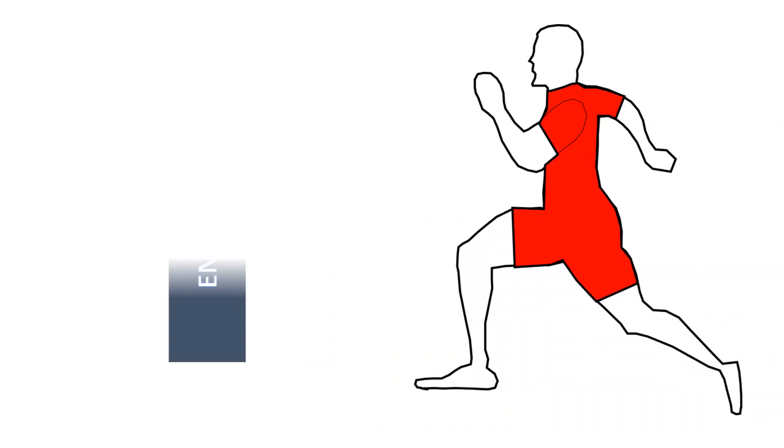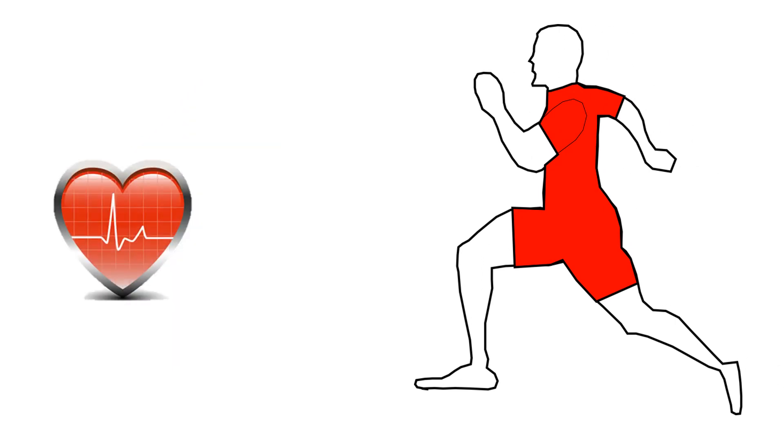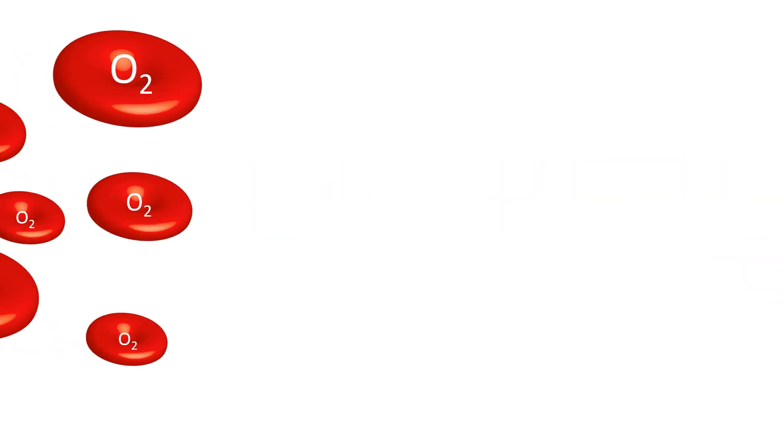During exercise, the human body reacts to the increased demand for energy. The heart rate increases, the breathing rate increases, and the breath volume increases, all of this to supply the muscles with more oxygenated blood.